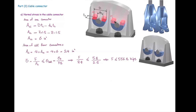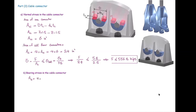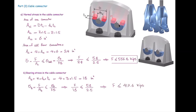One more stress to consider: bearing stress in the connector, because the bolt also sits on the connector. Similar to the gusset plate bearing stress analysis, but now we consider stress on the blue connector. The bearing area is the number of bolts per side (two) multiplied by two sides, giving four total, multiplied by the bolt diameter d_b and the connector thickness t_c. Plugging into the design equation and solving for force gives 417.6 kips.